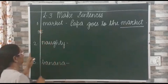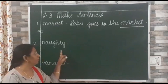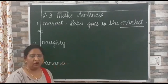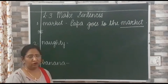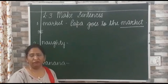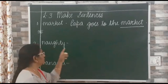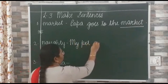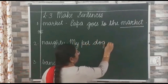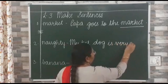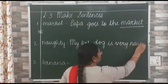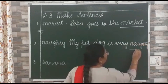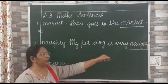Now leave one line and write down the next word: 'naughty' — N-A-U-G-H-T-Y. We have to use this word and make our own sentence. Like: 'My little brother is very naughty,' or 'My pet dog is very naughty,' or 'Naughty children trouble everyone.' So let us write: 'My pet dog is very naughty.' And underline the word on the red line.